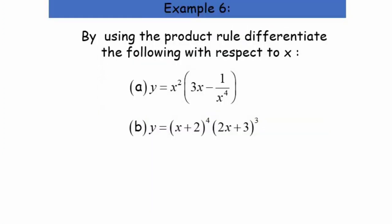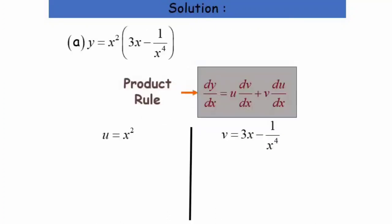To better understand this, let's try two questions: Question A and Question B. Starting with Question A: y equals 2x squared multiplied by (3x minus 1 over x to the power of 4). I am going to choose u equal to x squared, so u prime equals 2x.